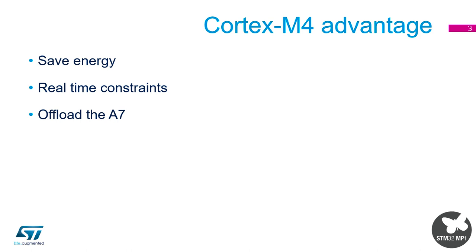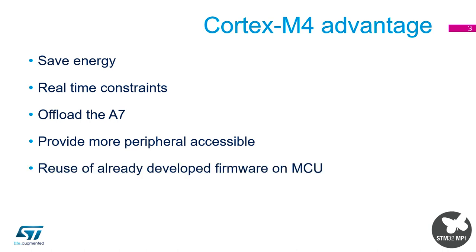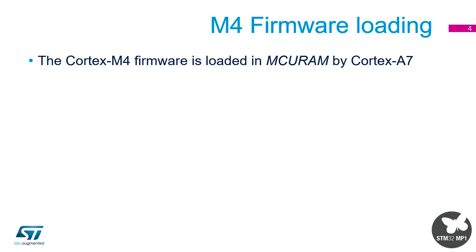It's a co-processor so you can offload work from the A7 to the M4, and it gives you more direct peripheral control — with the HAL libraries or low-layer libraries you get more direct control over what a peripheral is doing. One of the biggest advantages is that the Cortex M4 is the same as any other STM32 Cortex M device, so all code written using the HAL libraries can be reused.